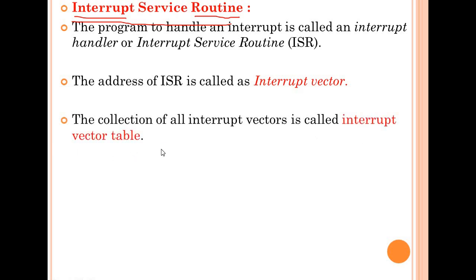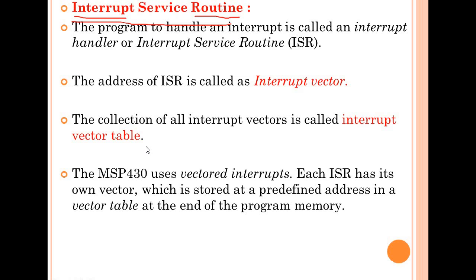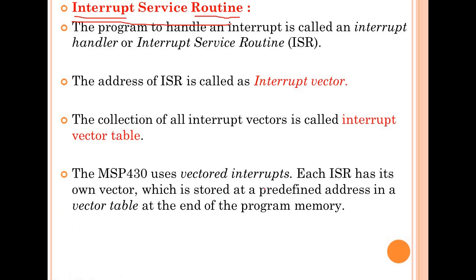The collection of all interrupt vectors is called an interrupt vector table, and in the interrupt vector table the addresses of all ISRs are present. The MSP430 uses vectored interrupts, meaning every interrupt has a specific address. Each ISR has its own vector — one vector means one address — stored as a predefined address in the vector table. This vector table is present at the end of the program memory.